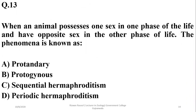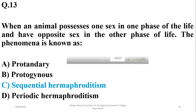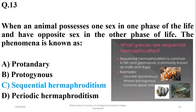Number thirteen: when an animal possesses one sex in one phase of life and the opposite sex in another phase of life, the phenomenon is known as sequential hermaphroditism. Protandry is the condition when the male part develops first, and protogyny means the female part develops first. The right option will be sequential hermaphroditism, which can be observed in certain snails, slugs, and some species of fish such as clownfish, wrasses, and the common slipper shell.